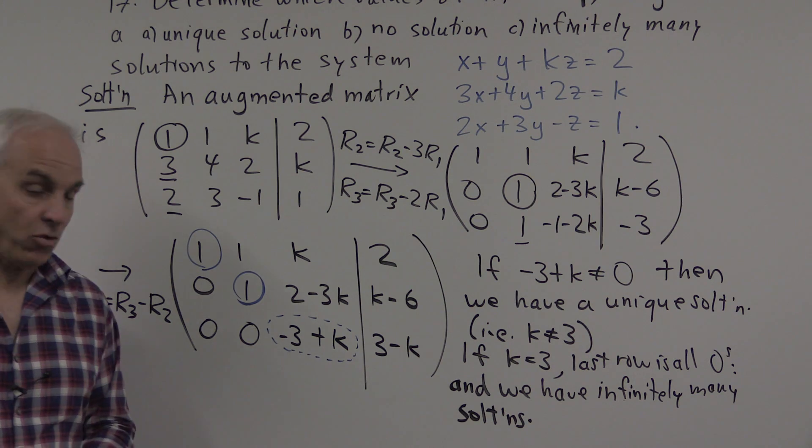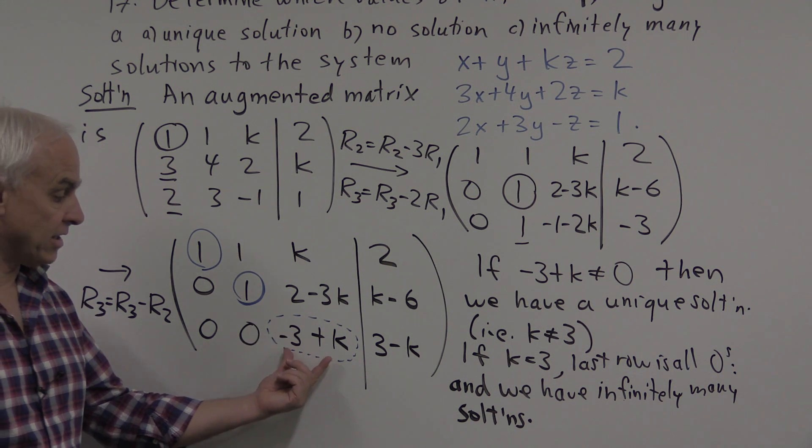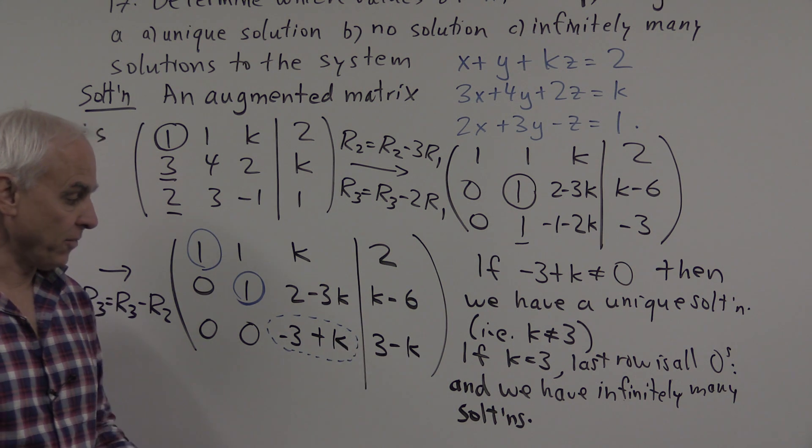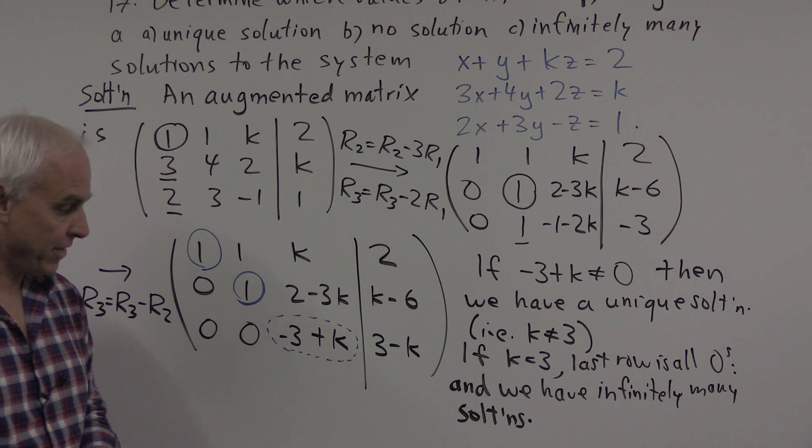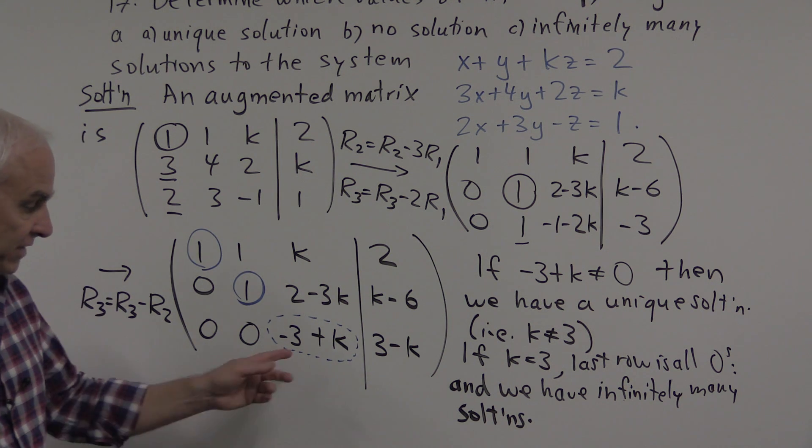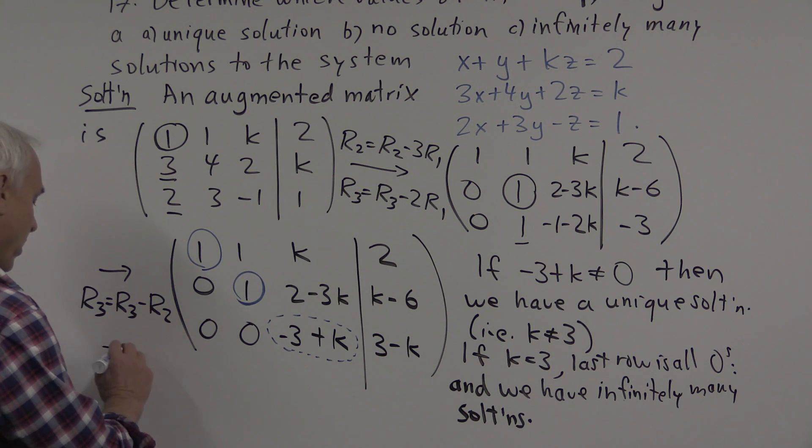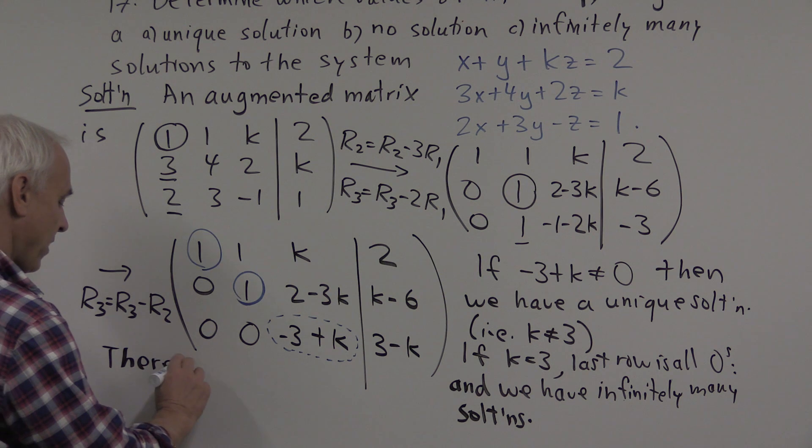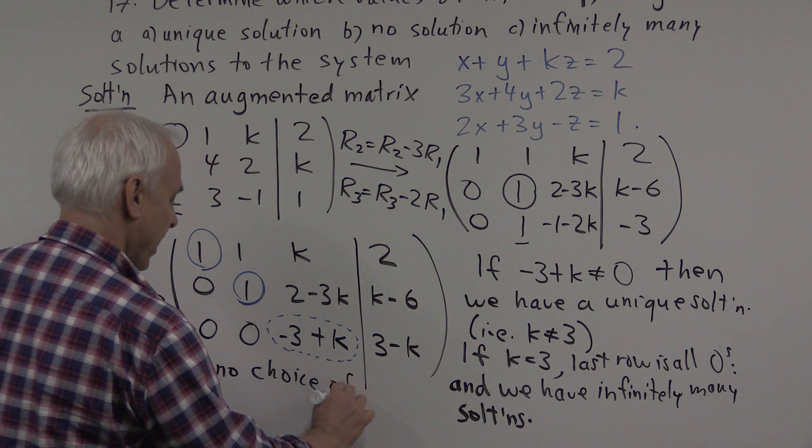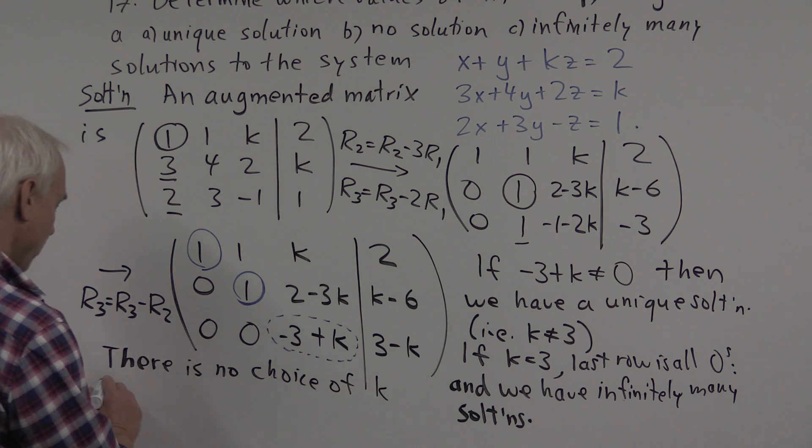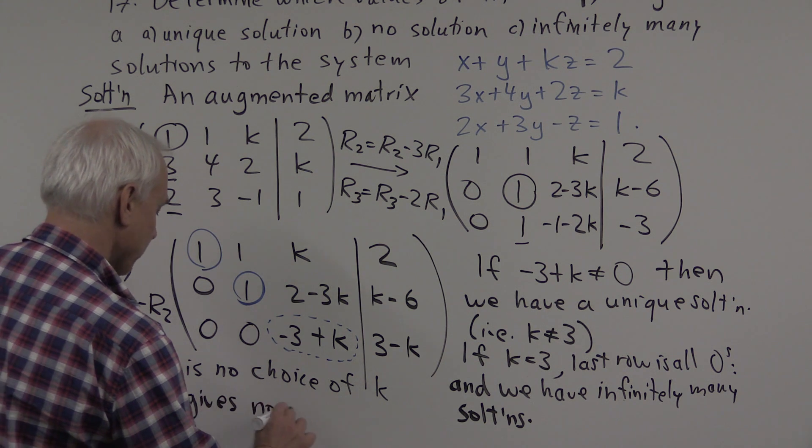Is there any possible way for us to have no solutions? That would be when this is 0, and this is non-zero, which would make this last column a leading column. Well, there's no way of doing that, because if this is 0, this is also 0. So there is no choice of k which gives no solution.